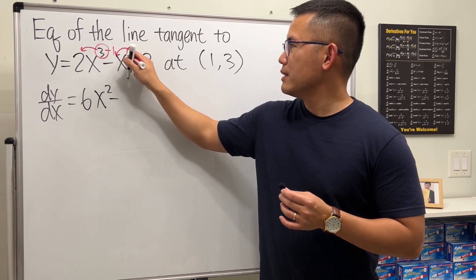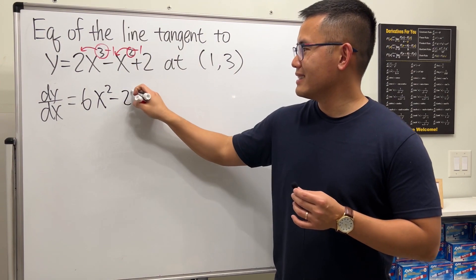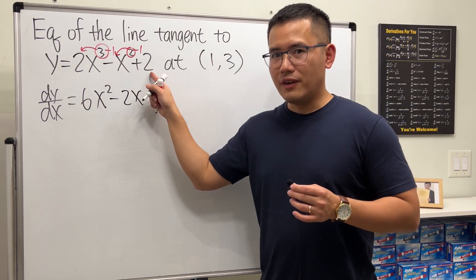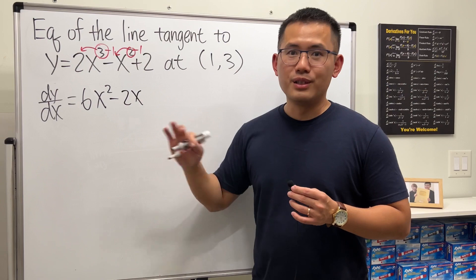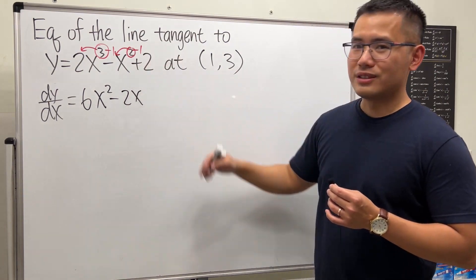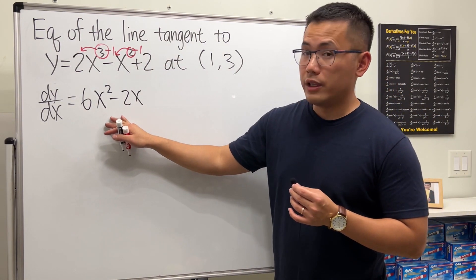Do the same thing here—put a two to the front and then minus one, so minus 2x. What's the derivative of just a number? It's zero. This is the formula for the derivative.